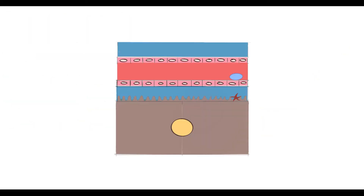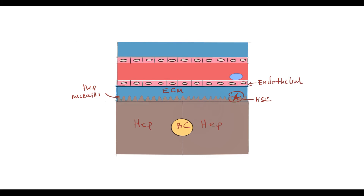To understand what happens in cirrhosis, there is a scheme of the liver sinusoid functional unit. There are two hepatocytes; between their apical membranes there is a bile canaliculus. On their basement membrane there are hepatic microvilli. Hepatic stellate cells are located on the hepatic basement membrane in the extracellular matrix space, also called the space of Disse. Endothelial cells separate the extracellular matrix space from the blood vessel called the sinusoid, and Kupffer cells adhere to the endothelial cells. So there are three major functional cells: endothelial cells, Kupffer cells, and hepatic stellate cells.